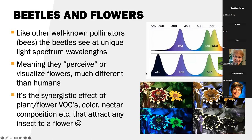Like other well-known pollinators, the bees, beetles also see at unique light-spectrum wavelengths. Here at the top, we have our eyesight — here's a beetle right here; it's going to perceive flowers a little differently than we see it. The attraction to that flower is going to be a synergism with the plant and flower VOCs, the color — especially if it's that white, dull, yellow, or those green flowers — and the nectar composition. Those are going to attract that beetle to that flower.